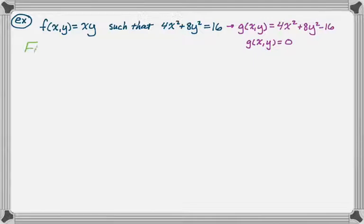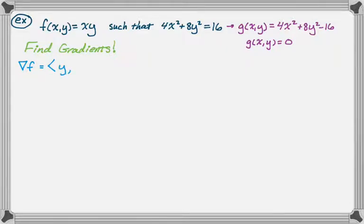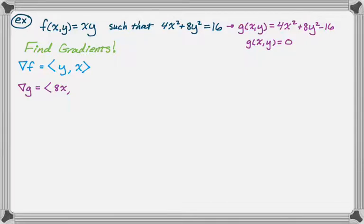First step is finding the gradients. The gradient of f: partial x of xy is just y, and partial y of xy is just x. For the gradient of g: partial x of (4x² + 8y² − 16) is 8x, since everything else goes to zero. Partial y is 16y, since only 8y² has a y in it.